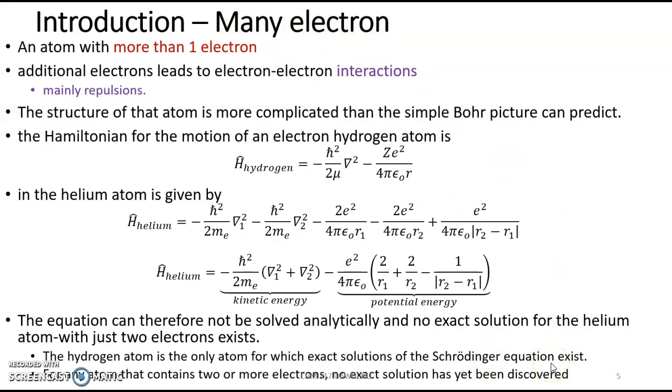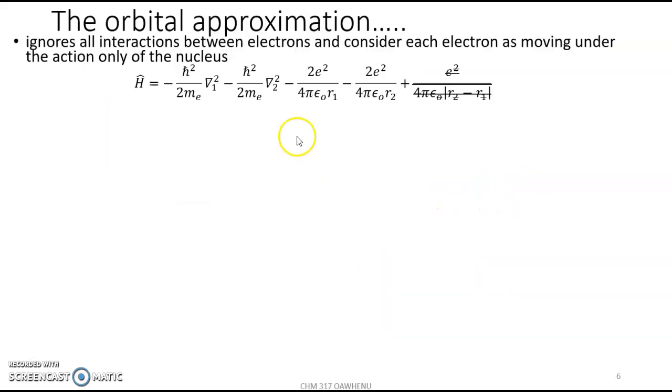However, approximations are then introduced. The first approximation, the orbital approximation, ignores all interactions between electrons and considers each electron as moving under the action of only the nucleus.